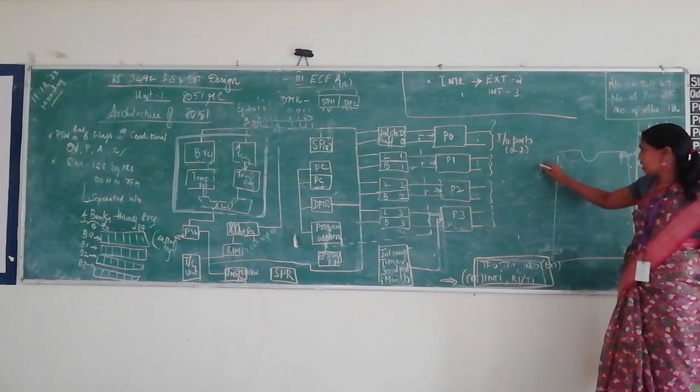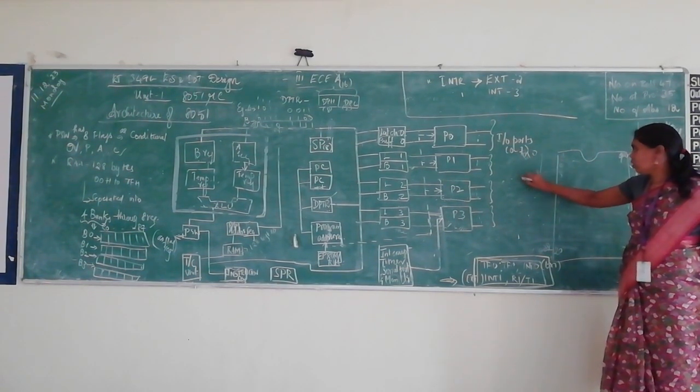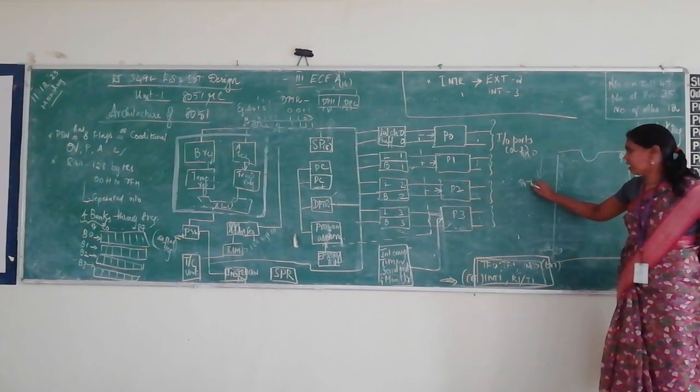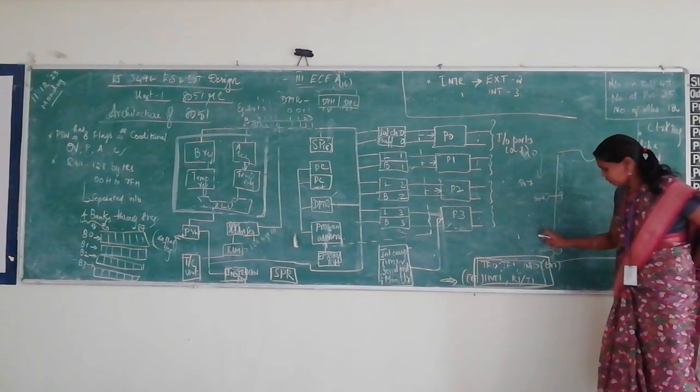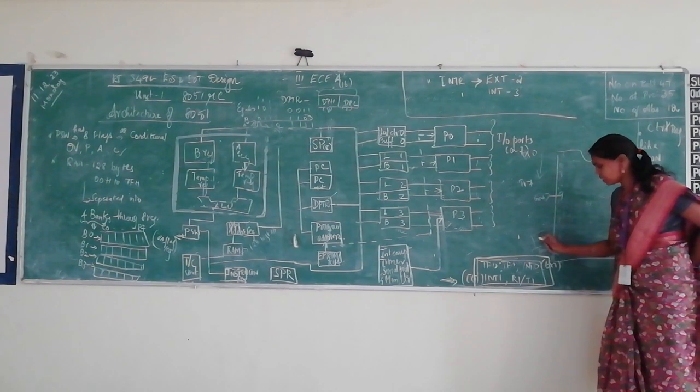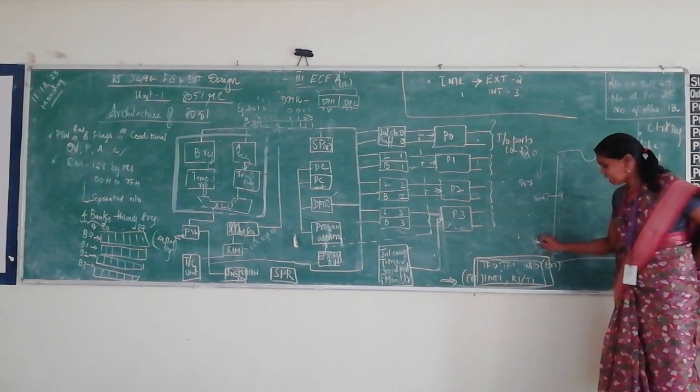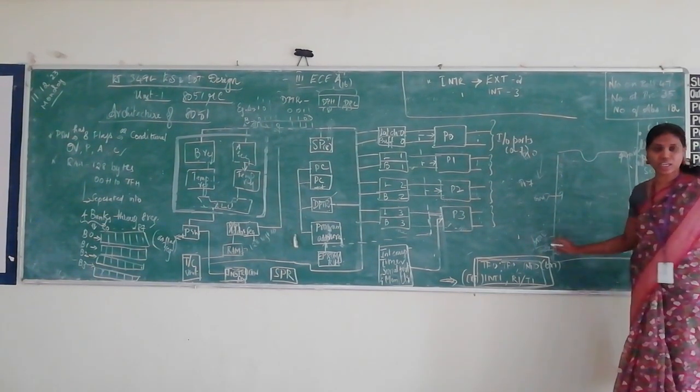And here is port 1.0 to port 1.7. And we will be having the ninth pin which we have as the ground. And from the other we will be having the two pins which are ideally located in the external, what is called as a crystal.